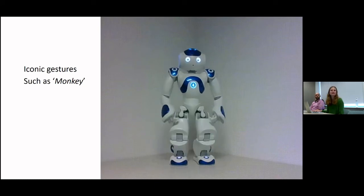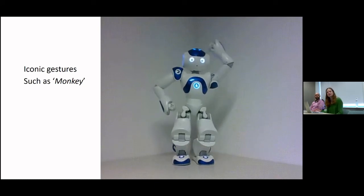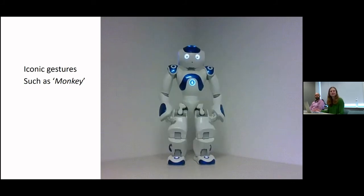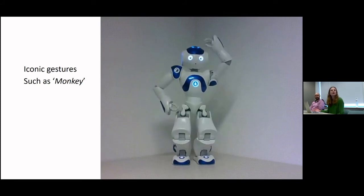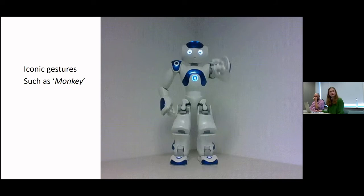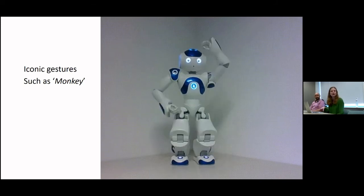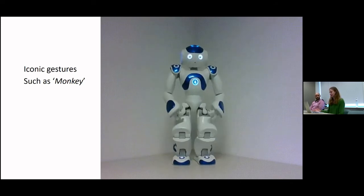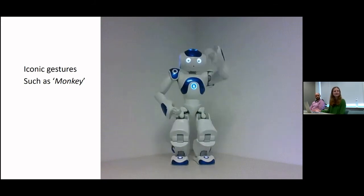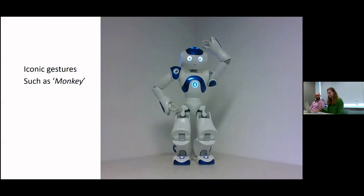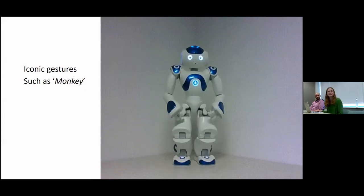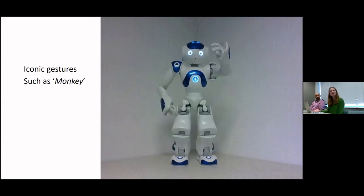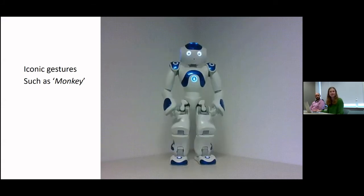Something we were particularly interested in is the comparison of a robot versus a tablet screen. Children know how to work with screens, but the advantage of having a robot is that it's a physical entity. There is something in the room that knows what you're talking about. It has arms, legs, and hands where it can display gestures. For example, the robot can use its body to express the word monkey with an iconic gesture.